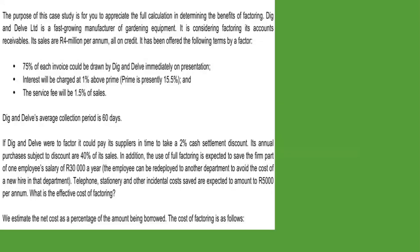Let's go through this example. Dick and Delft Ltd is a fast-growing manufacturer of gardening equipment considering factoring its accounts receivables. Its sales are 4 million rand per annum, all on credit. The factor has offered the following terms: 75% of each invoice could be drawn by Dick and Delft immediately on presentation. Interest will be charged at 1% above prime, and prime is presently 15.5%. The service fee will be 1.5% of sales. Dick and Delft's average collection period is 60 days.